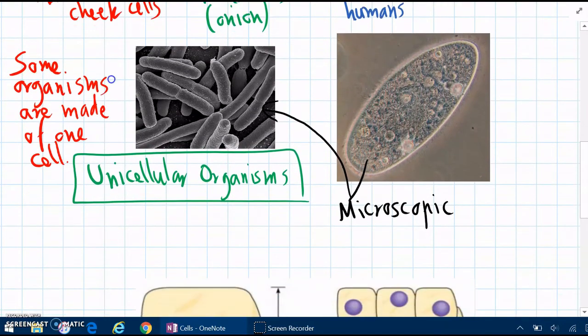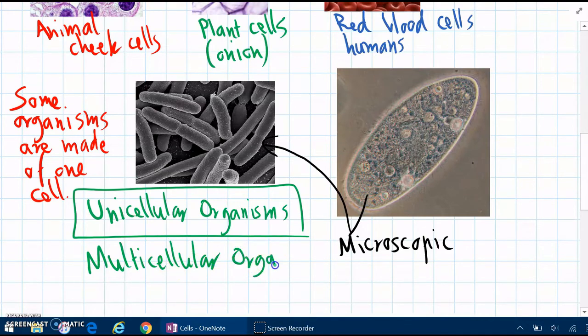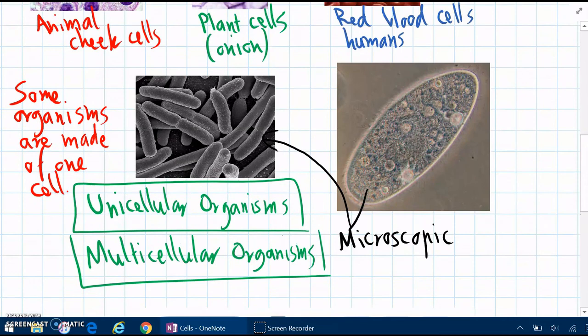So the opposite of unicellular, we call multicellular. And these are organisms that are made of lots of cells.